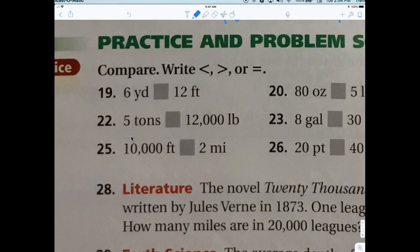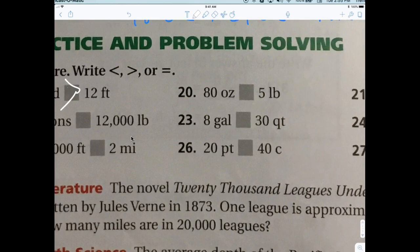Now we're comparing. Six yards versus 12 feet: think of football — each yard has three feet, so six yards is 18 feet. 18 feet is greater than 12 feet, so six yards is greater than 12 feet. Five pounds versus 80 ounces: each pound has 16 ounces, so five pounds is 80 ounces. They are equal.